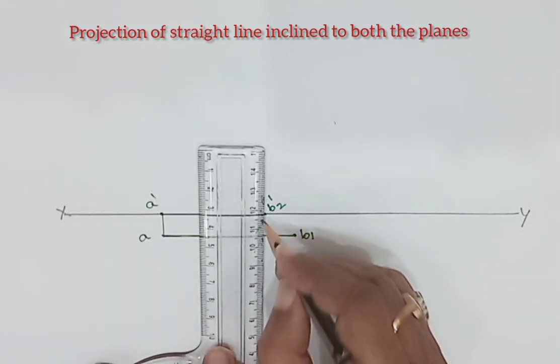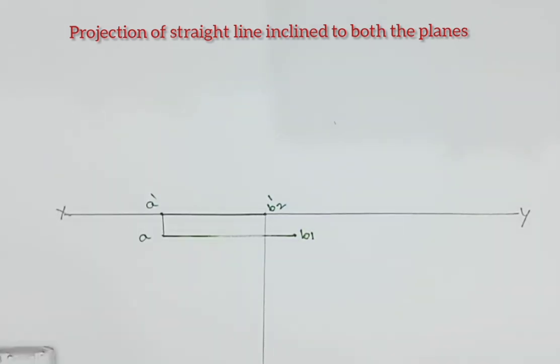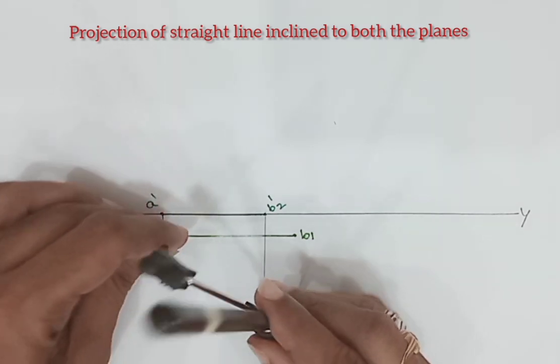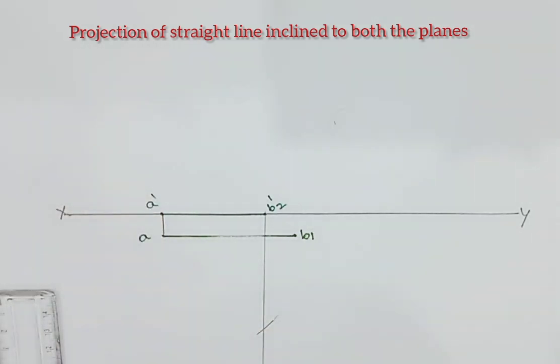Let B2 drop projector. After that with 75 mm as a radius, A as a center, draw an arc. Name this point as B2. Then join AB2.